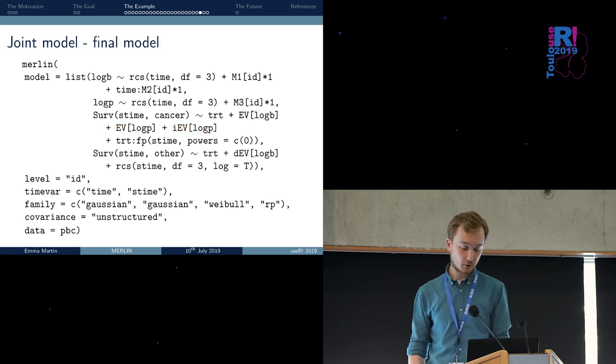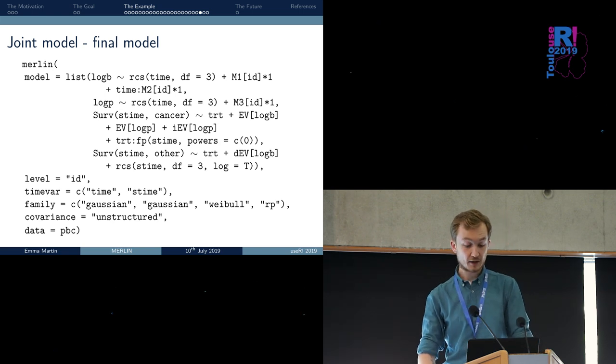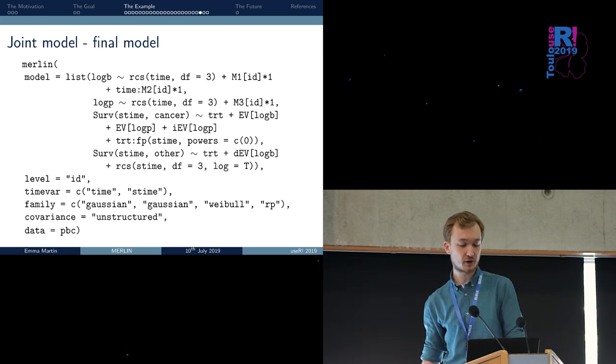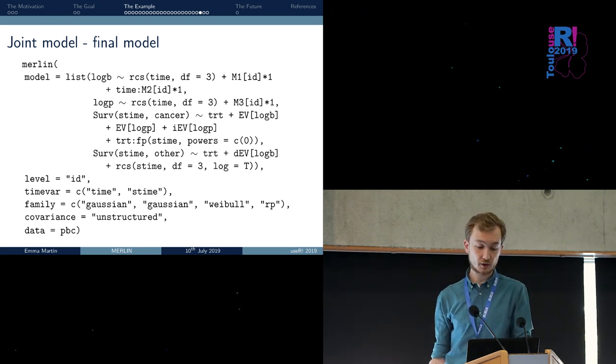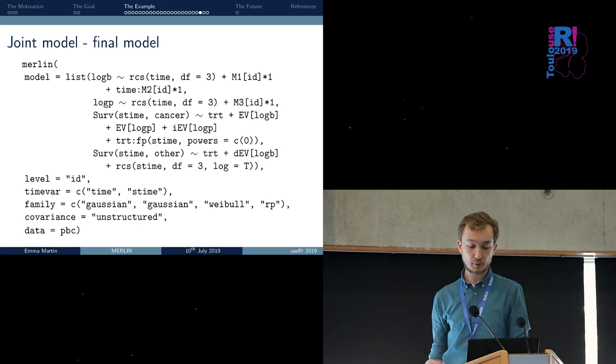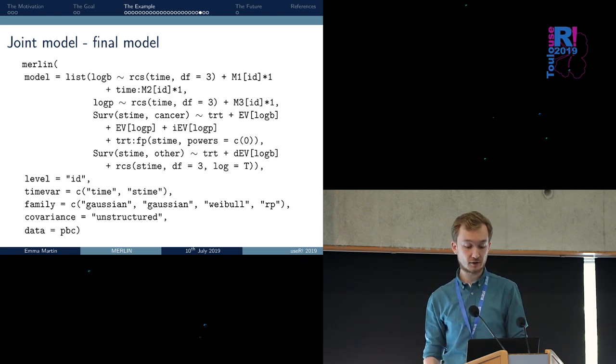This is the final model that we can fit. As we saw, we can, within this framework, start from a very simple model and end up with a model with a multivariate longitudinal outcome and two competing risks, a model using cause-specific hazards. All of this is modeled jointly at the same time.